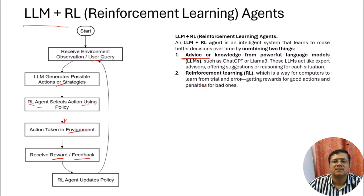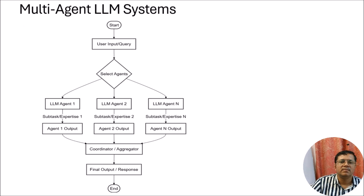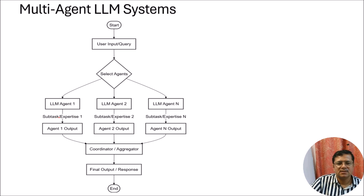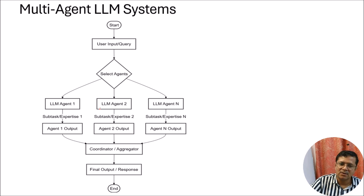It contains two things: powerful language models and reinforcement learning. In a multi-agent LLM system, there are two possibilities: all agents belong to separate language models, or all independent LLM agents belong to a single large language model. We use prompt engineering or few-shot prompting to design each agent to be dedicated to performing a particular type of task, sub-task, or to have expertise on a particular thing.